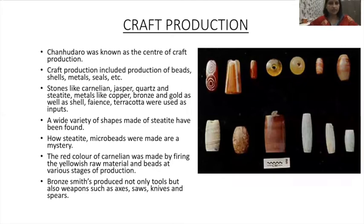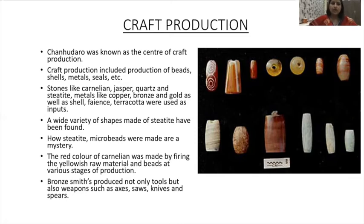Now we go to craft production. Chanhudaro has been identified by historians as the center of craft production. Craft production included the production of beads, shells, metals, and seals. Stones like carnelian, jasper, quartz and steatite, metals like copper, bronze and gold, as well as shell, faience and terracotta were used as inputs. A wide variety of shapes made of steatite have been found. How steatite microbeads were made remains a mystery even now. The red color of carnelian was made by firing the yellowish raw material. Bronze smiths produced not only tools but also weapons such as axes, saws, knives and spears.